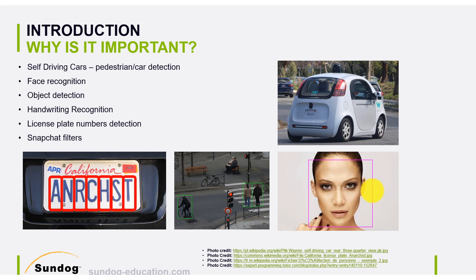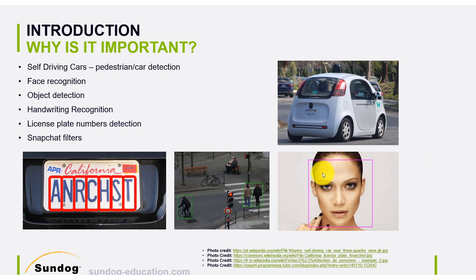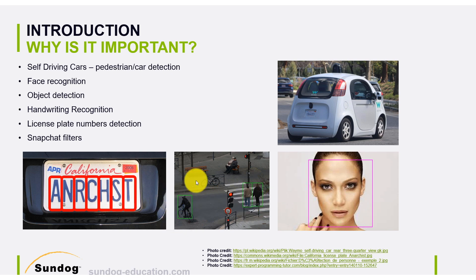So why is computer vision important? Computer vision is applicable everywhere, not just in self-driving cars. It can be used for pedestrian and car detection, face recognition — Facebook and Snapchat for example use computer vision techniques — and object detection. We can detect pedestrians crossing, cyclists, and so on.